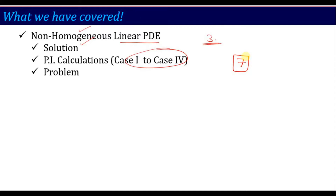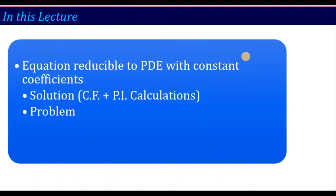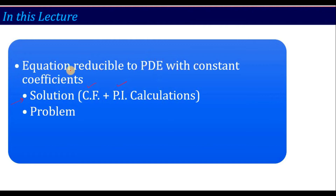Previous lecture knowledge is a requirement. If you remember that, then proceed, because in this lecture we are going to talk about equations reducible to the partial differential equation with constant coefficients. Until now, we have dealt with constant coefficient equations, but now the question arises: if variable coefficients are given, how do we first convert that variable coefficient equation to a constant coefficient equation, and then calculate the complementary function and particular integral.